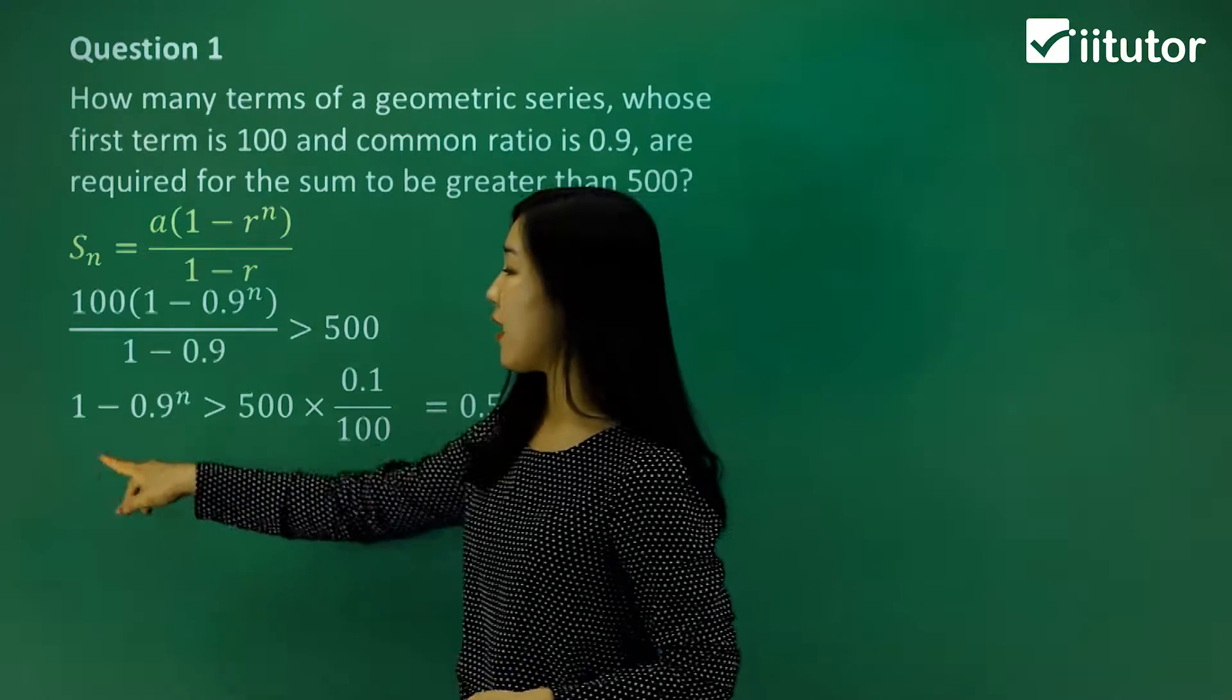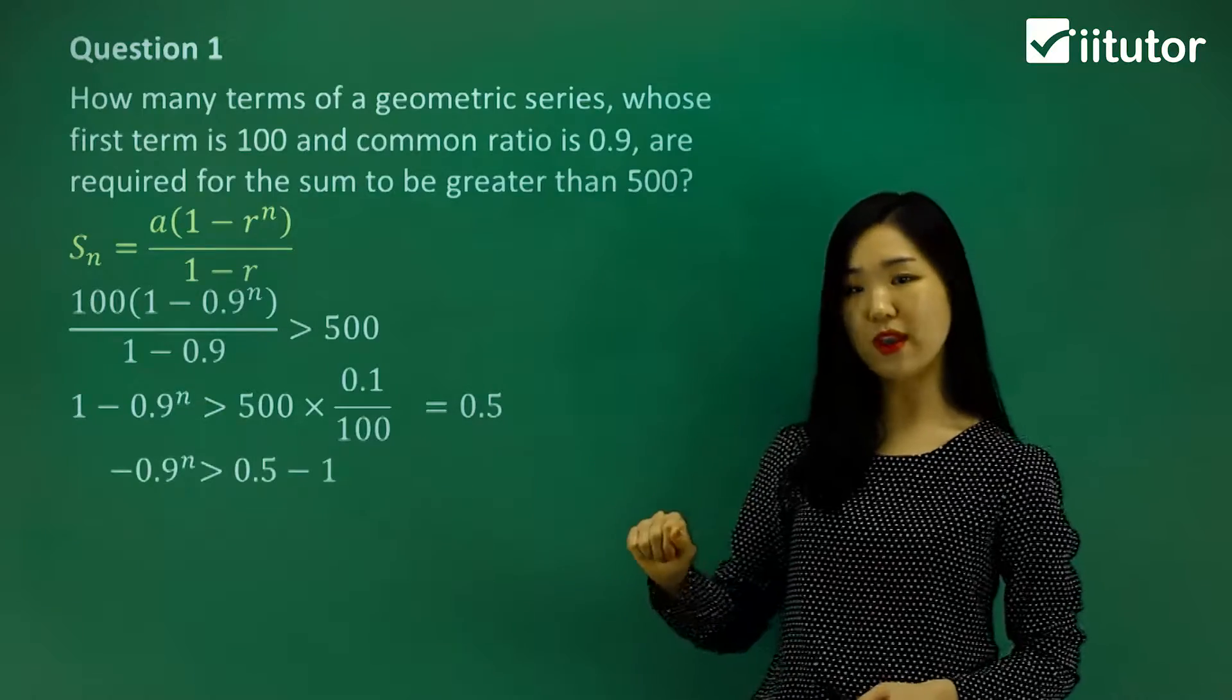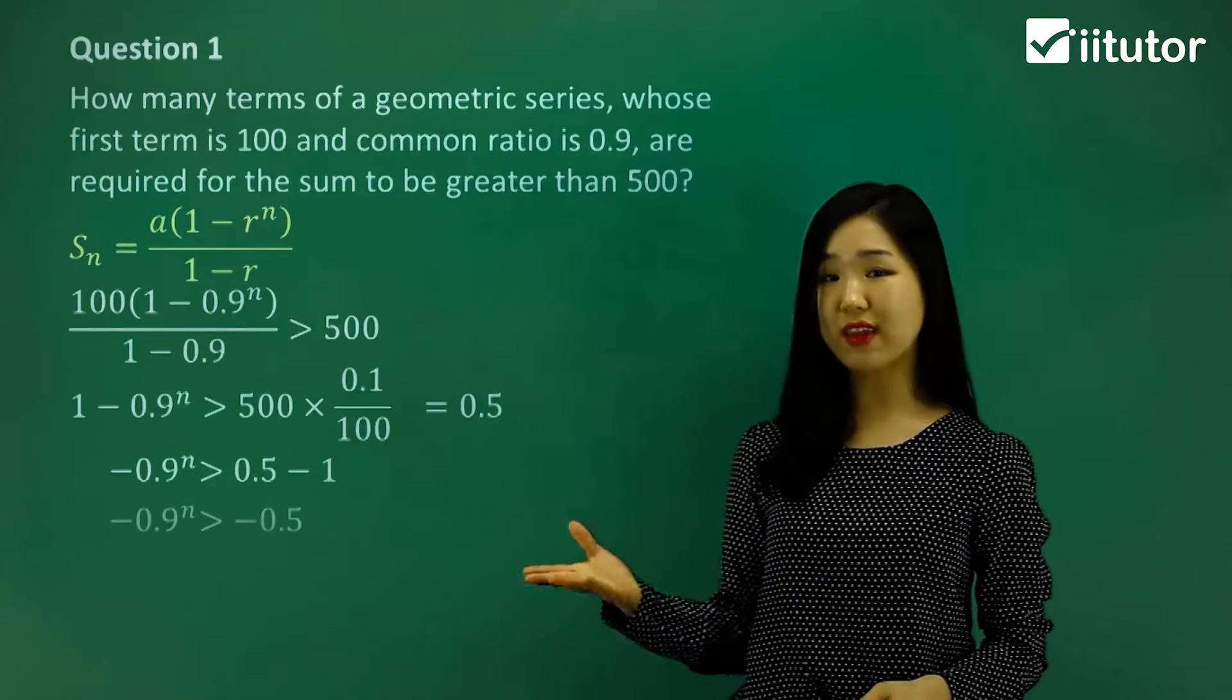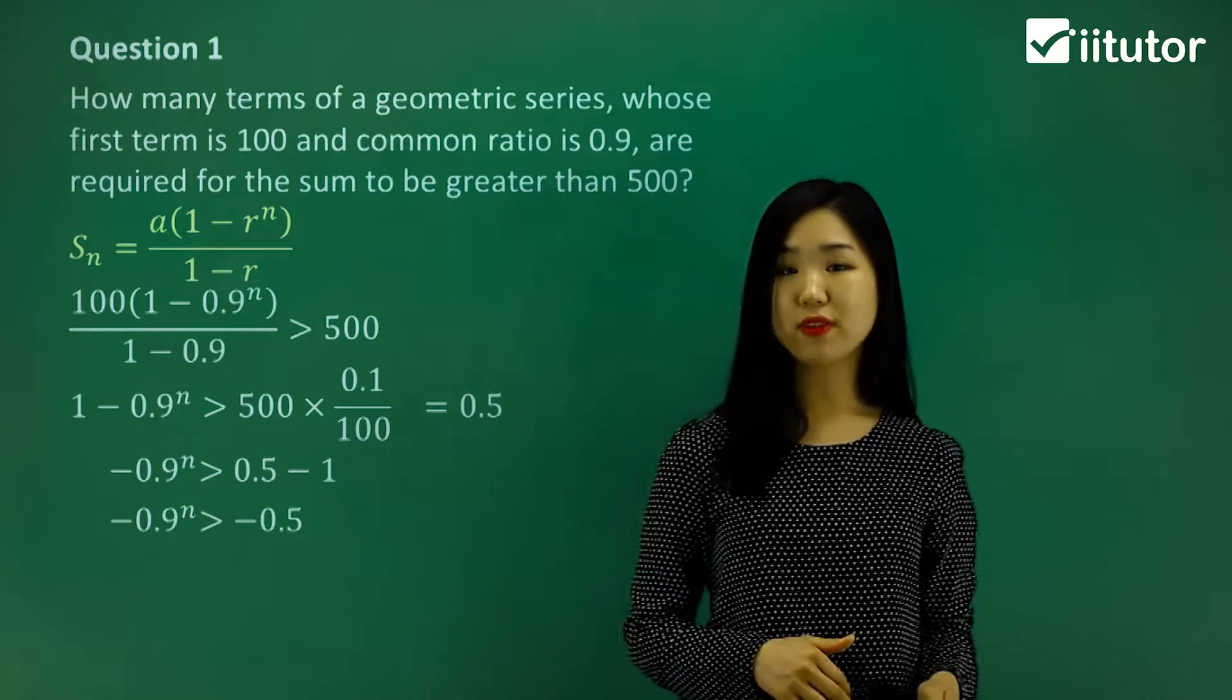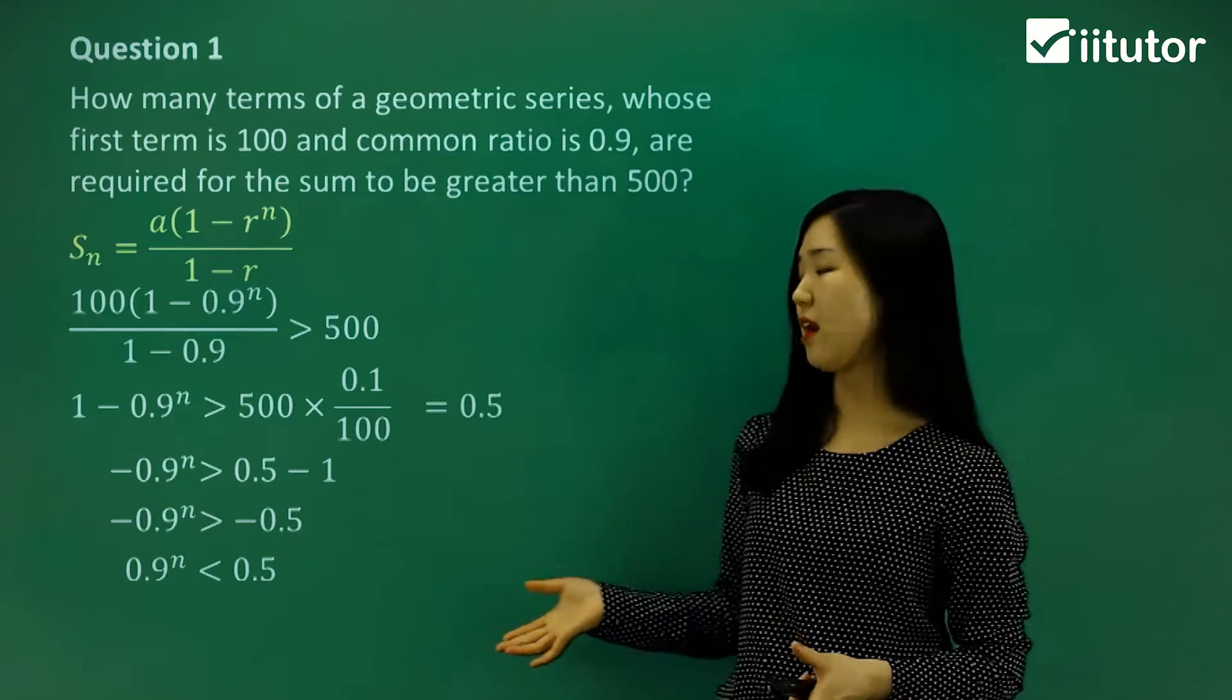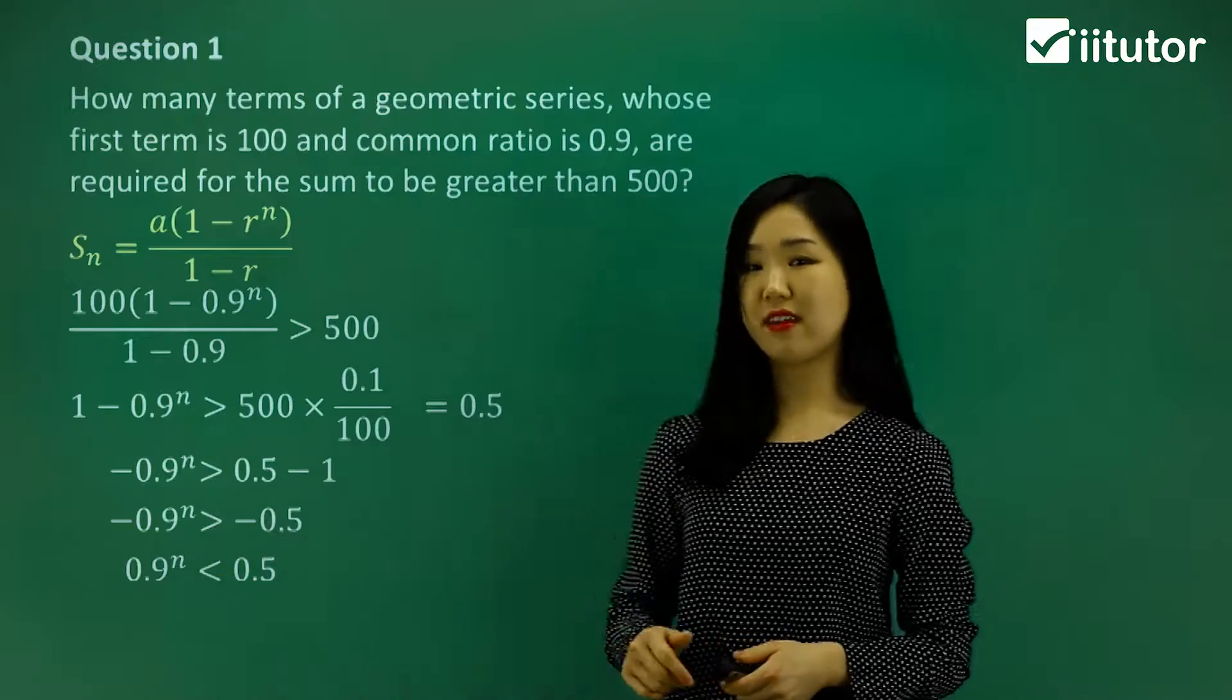Now the 1, I'm going to subtract it over to the other side. So it's 0.5 minus 1. And on the left-hand side, I'll have my negative 0.9 to the power of n left. 0.5 minus 1 is negative 0.5. Now, to get rid of the negatives on both sides, I have to make sure I switch the sign. When we divide or multiply by a negative, which I'm doing now, we flip the sign around. So 0.9 to the power of n is less than 0.5.